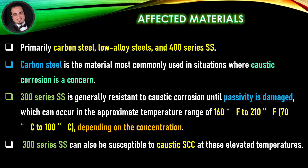Affected materials: Primarily carbon steel, low alloy steels, and 400 series stainless steel. Carbon steel is the material most commonly used in situations where caustic corrosion is a concern. 300 series stainless steel is generally resistant to caustic corrosion until passivity is damaged, which can occur in the approximate temperature range of 160°F to 210°F depending on concentration. 300 series stainless steel can also be susceptible to caustic stress corrosion cracking at these elevated temperatures.